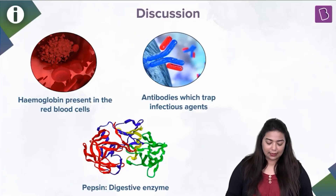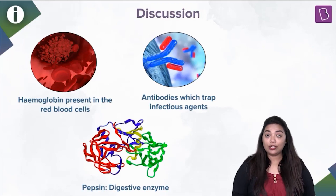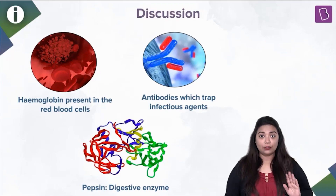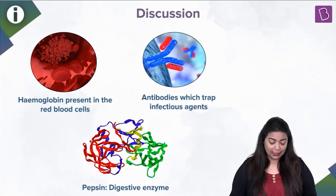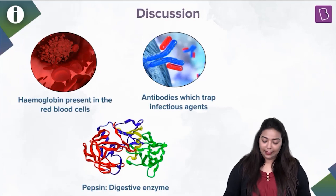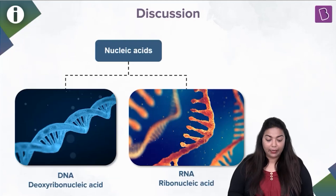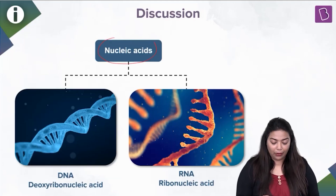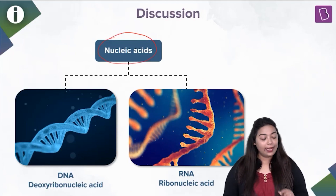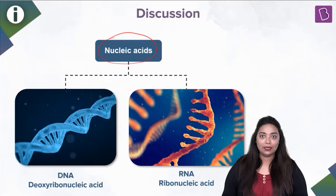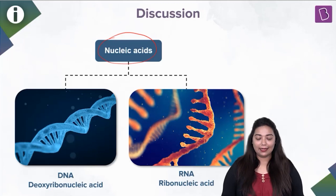Hemoglobin is present in the blood cells. Antibodies are Y-shaped and try to trap out microbes. Pepsin is a digestive enzyme found in the stomach. Nucleic acids give you DNA and RNA — something you did study.